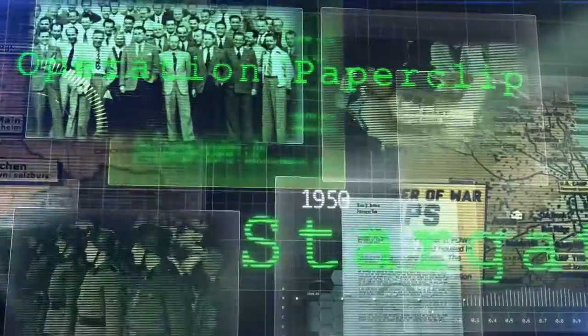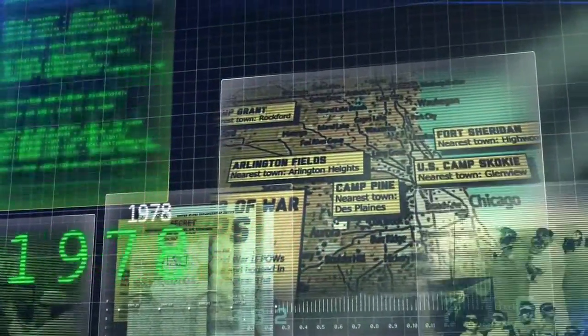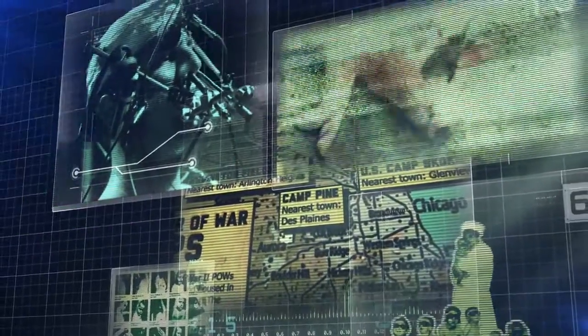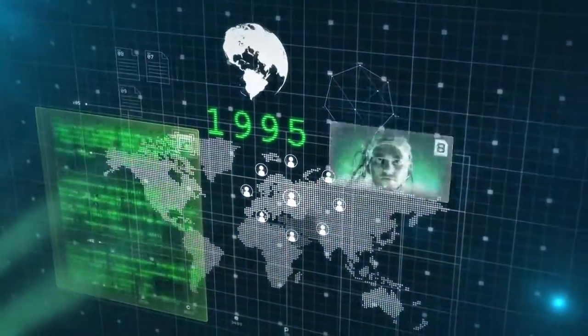Several decades later, Stargate Project was established in 1978, focusing on cultivating superhuman powers, such as remote visions and telekinesis to kill animals. It was exposed in 1995, but people dismissed it as a hoax and a joke.